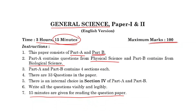Both Part A and Part B have four sections each. There are a total of 33 questions in the paper. There is internal choice for Section 4 of both Part A and Part B. Sections 1, 2, and 3 have no internal choice; Section 4 has internal choice.